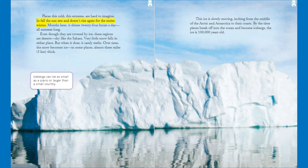Places this cold, this extreme, are hard to imagine. In fall, the sun sets and doesn't rise again for the entire winter. Months later, it shines 24 hours a day all summer long. Even though they are covered by ice, these regions are deserts — dry like the Sahara. Very little snow falls in either place, but when it does, it rarely melts. Over time, the snow becomes ice, in some places almost three miles or five kilometers thick.